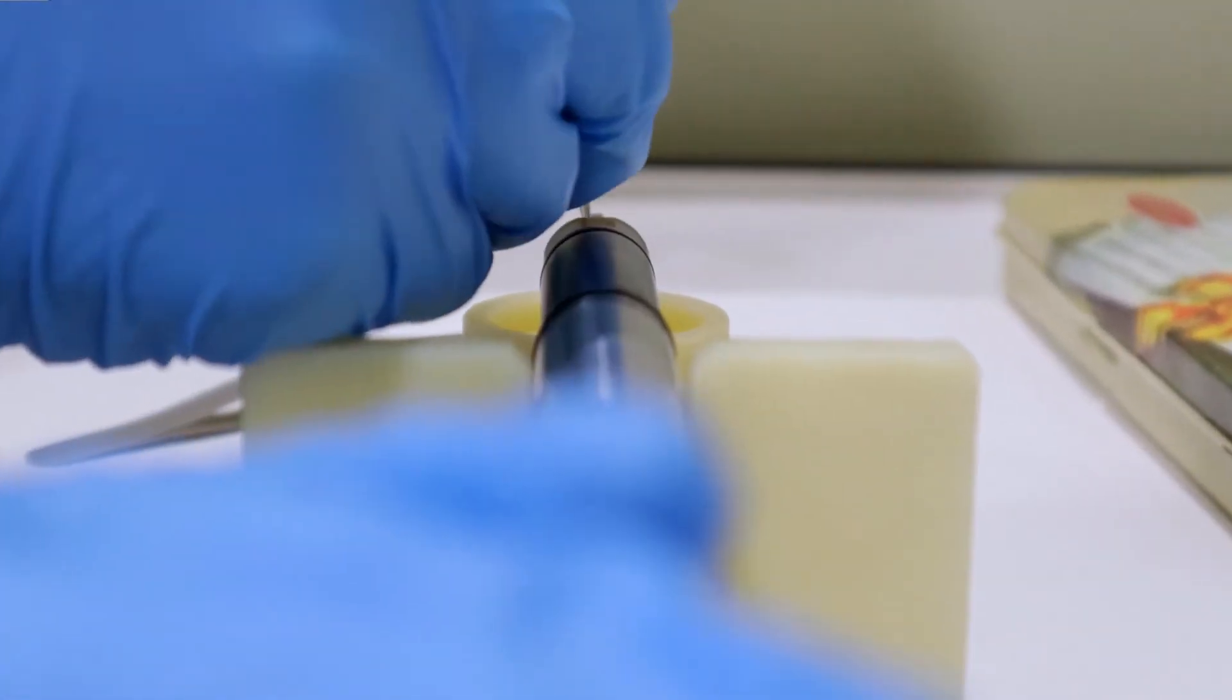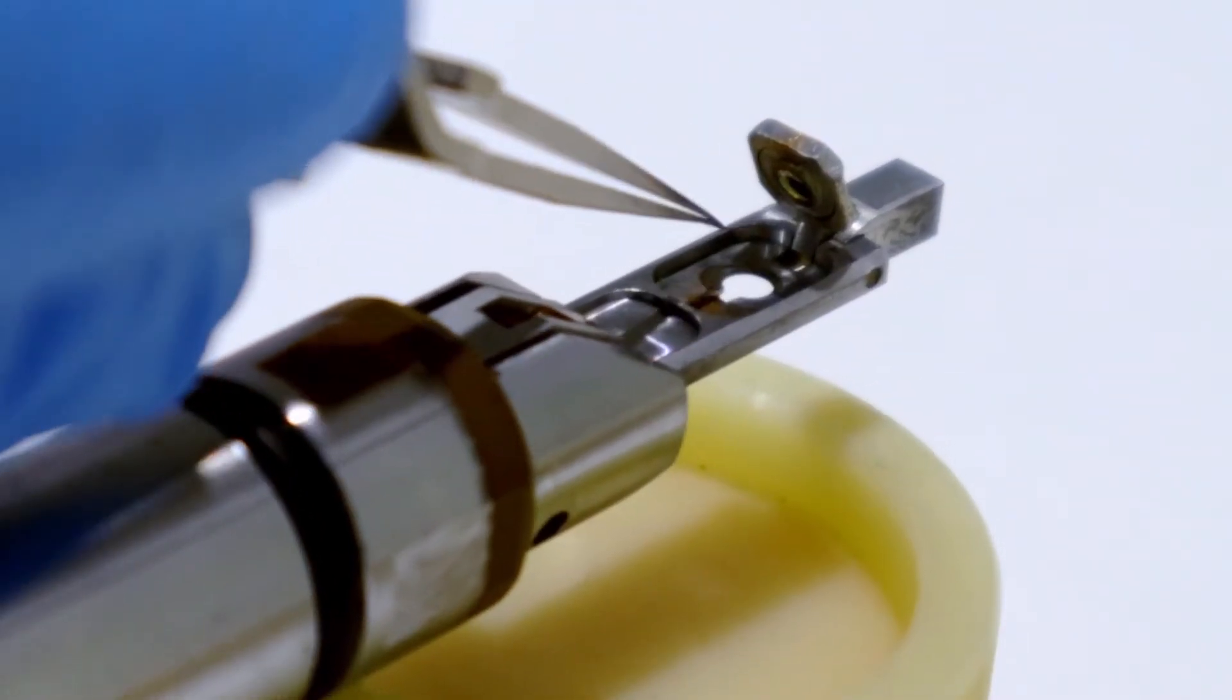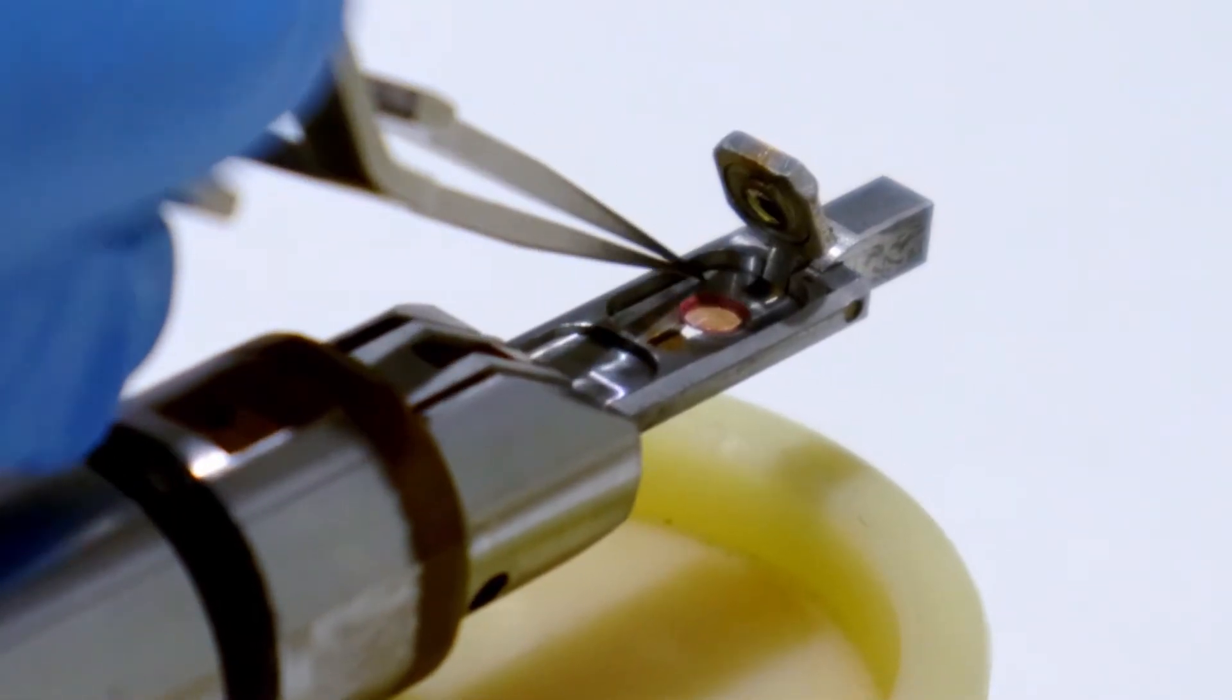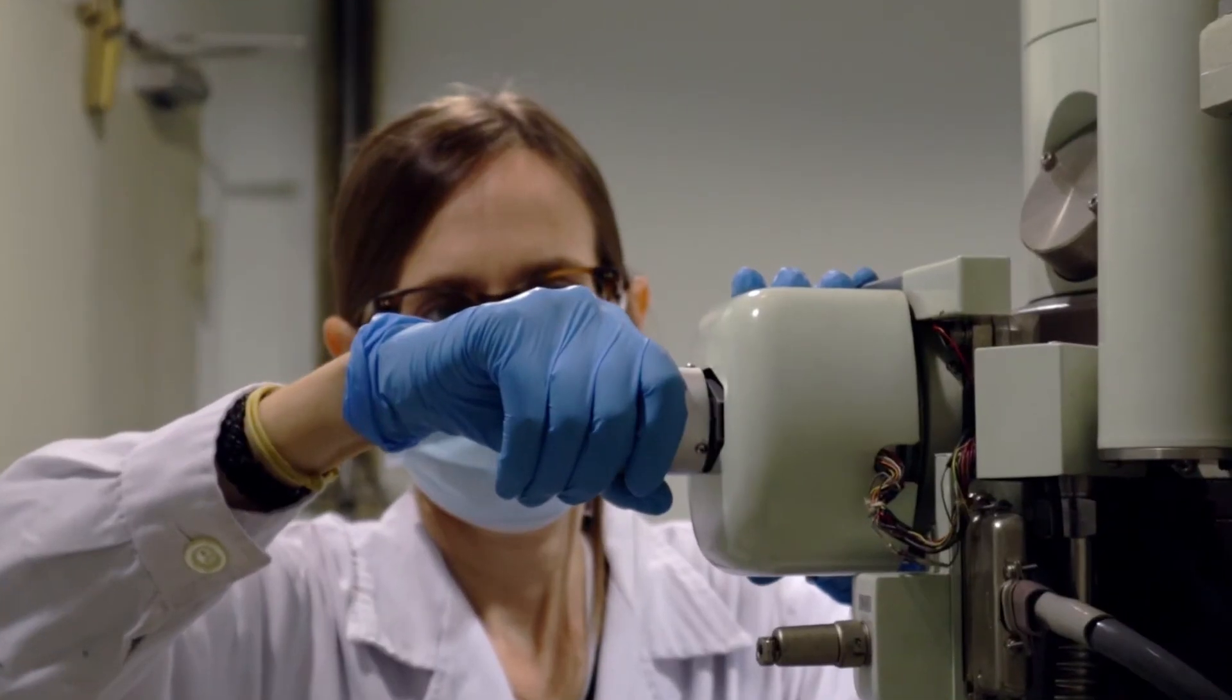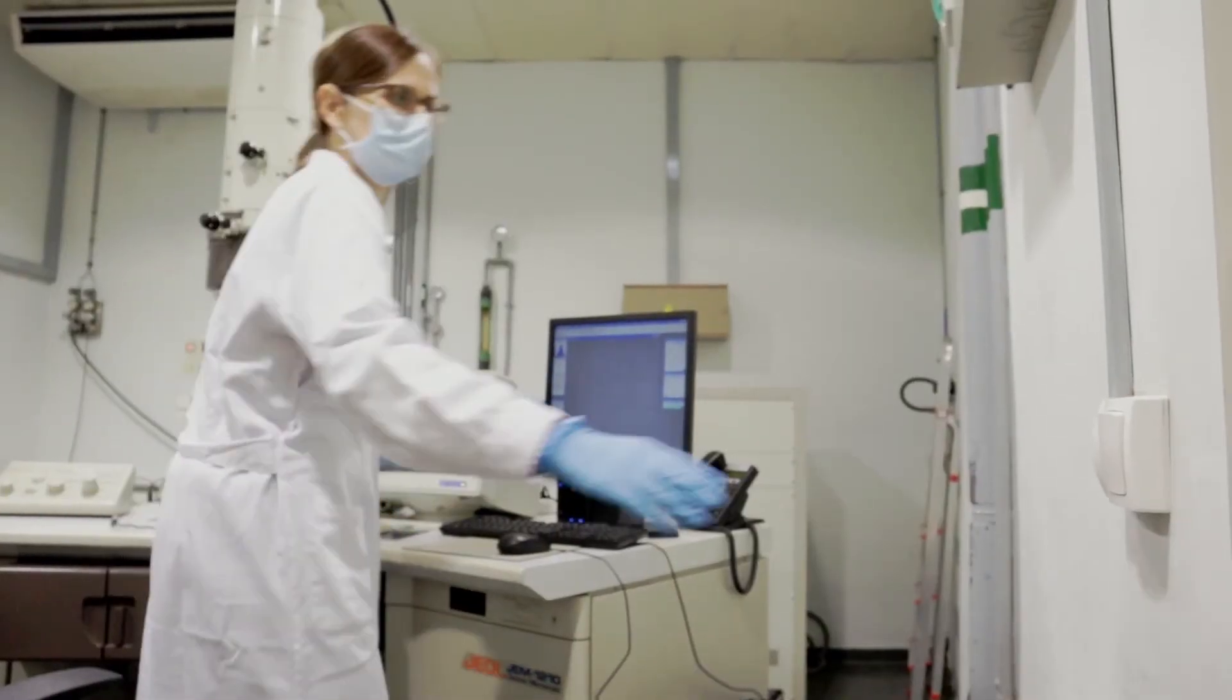We prepare the sample in a small support, which goes inside the microscope in high vacuum. In TEM, the electron beam does not bounce off the sample. It goes through it, so it needs to be very thin. The electron beam is transmitted through the sample to form the image, which we see on the computer.